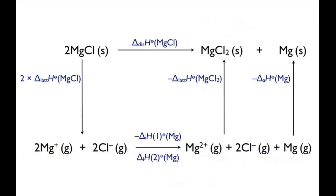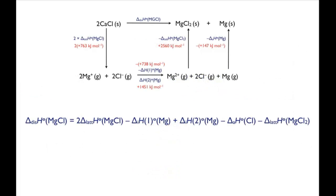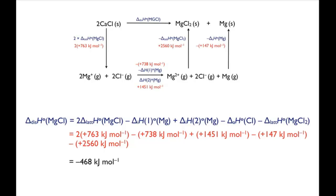Going back to the enthalpy cycle, we now have all of the terms we need. Putting the numbers into an expression for the enthalpy change of disproportionation gives us a value of minus 468 kJ per mole. This means that the enthalpy change of disproportionation is strongly exothermic, and that MgCl is unstable with respect to decomposition via disproportionation. If it ever did form, it would decompose into MgCl2.